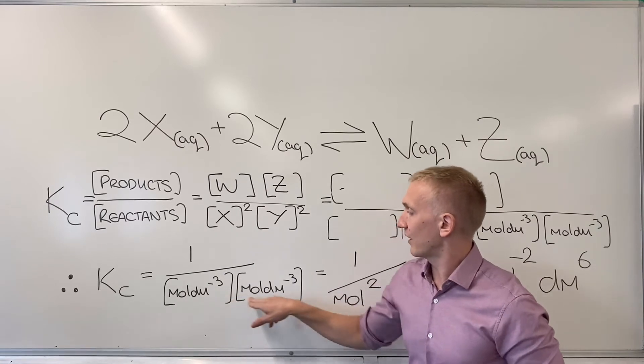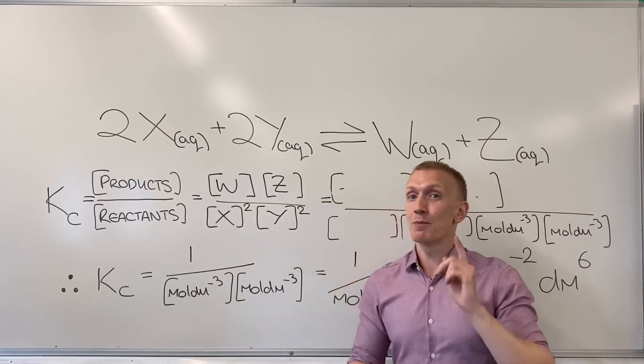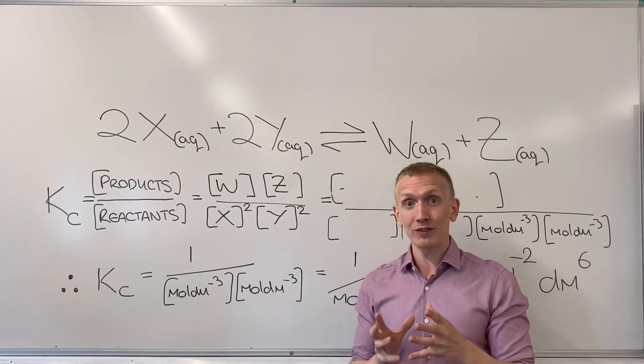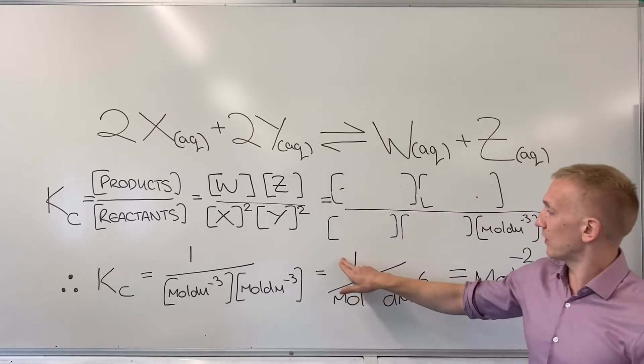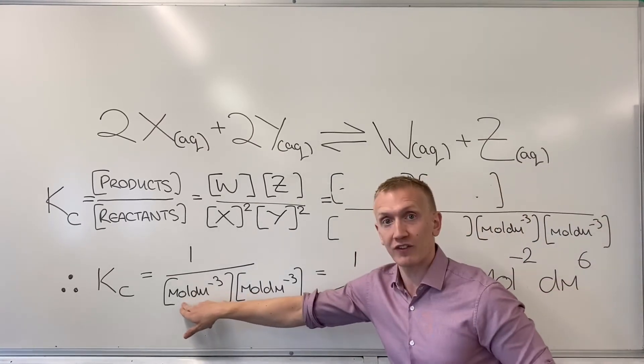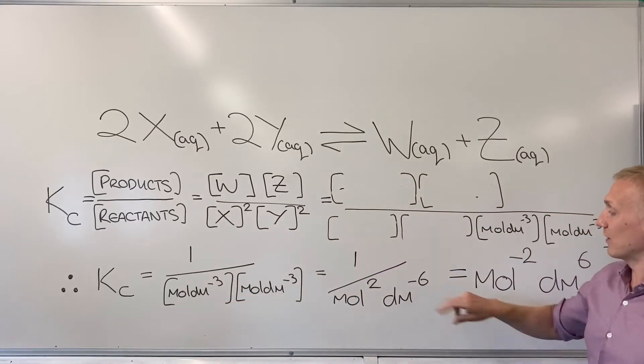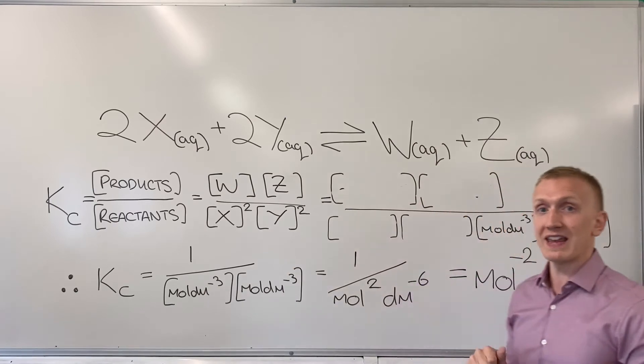Here with these two terms left on the bottom my next task is to combine them together. And remember your GCSE maths when I do that I'm going to add up the powers. And so I leave myself here with one over mole squared because I had two separate mole terms just here. And dm to the power of minus six because I had two dm to the power of minus three over here. I've just added them up.